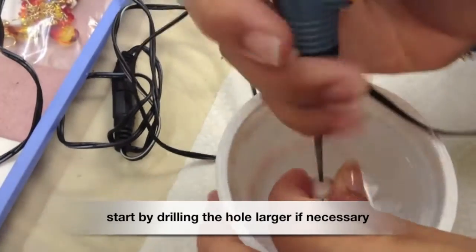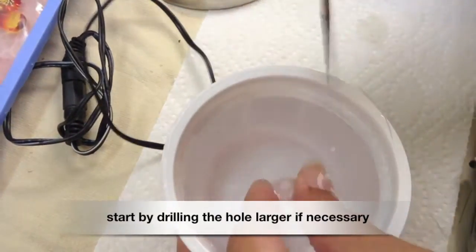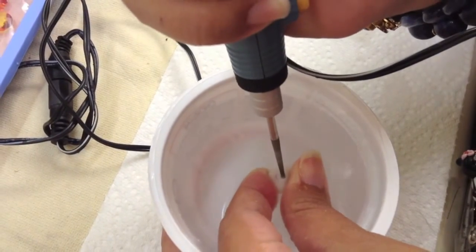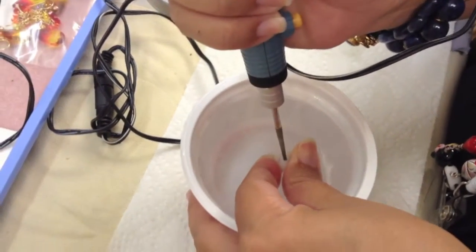Before you start your Puka shell ring, make sure that the hole in your shell is large enough to accommodate the wire. If not, use a hand reamer or a drill to make the hole larger.